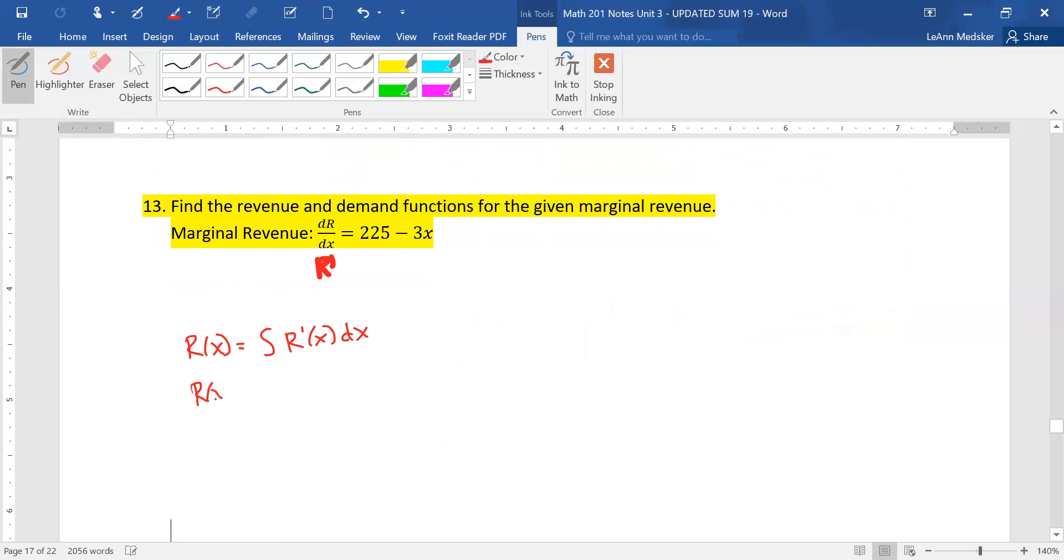So we put in our marginal revenue, which is 225 minus 3x dx. We take our antiderivative. So we add a power, remember essentially, and divide by the numbers. So this is 225x. This will be minus 3x squared over 2. We have our plus c.